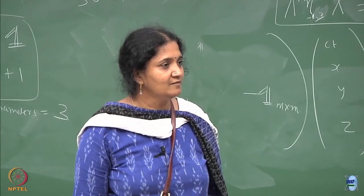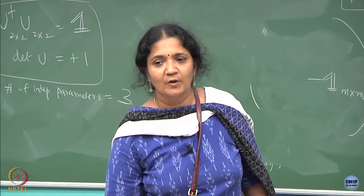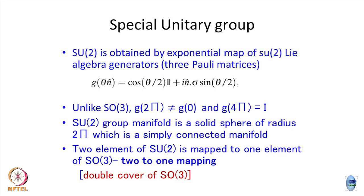Pauli matrices have nice properties. The group elements of SU(2), which is exp(iθ·σ), can be rewritten as cos(θ/2)·I + i(n̂·σ)sin(θ/2). This shows the group elements explicitly in terms of sin and cos. The main point is to understand the group elements and group parameters.